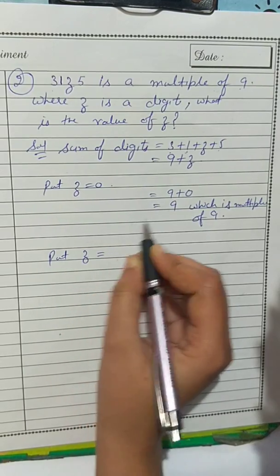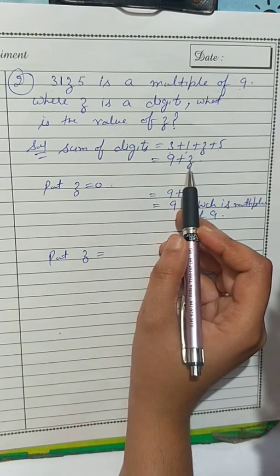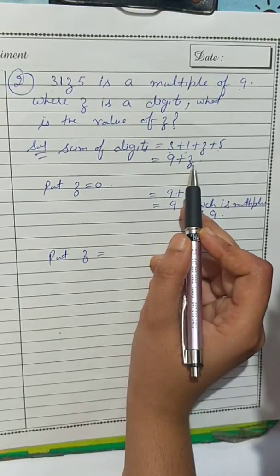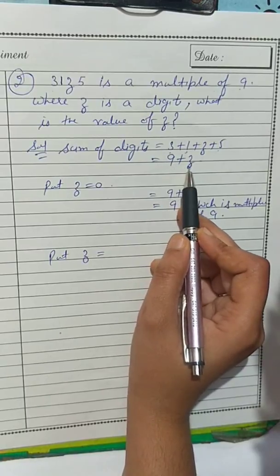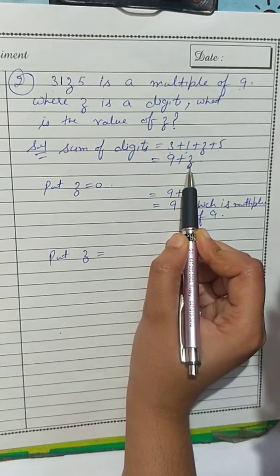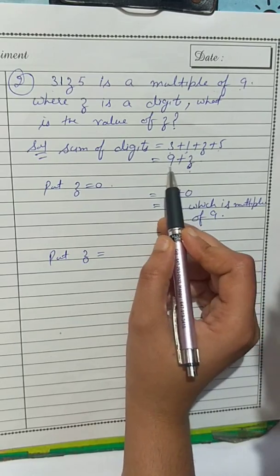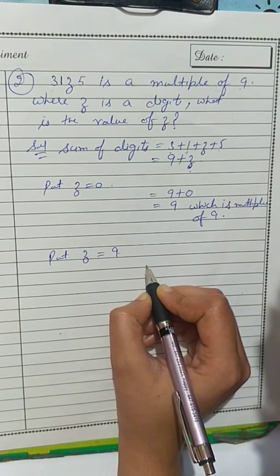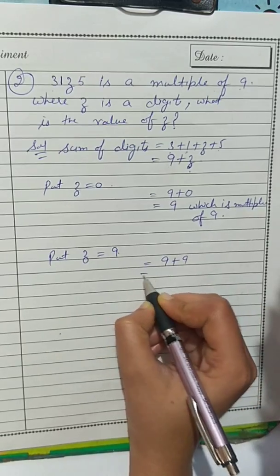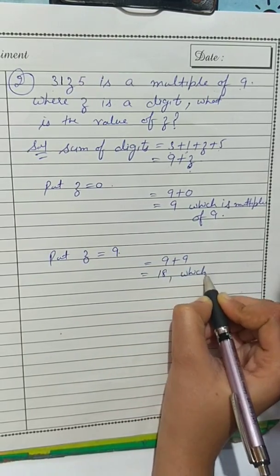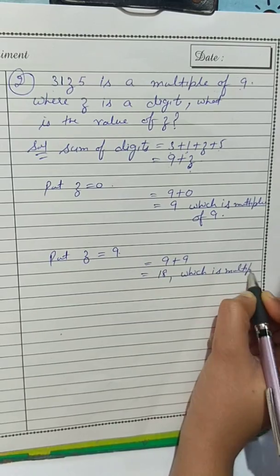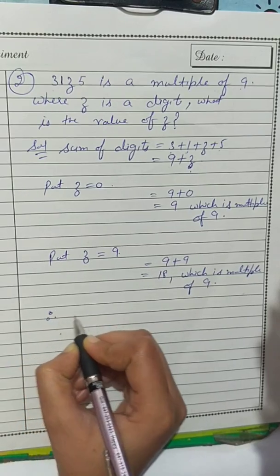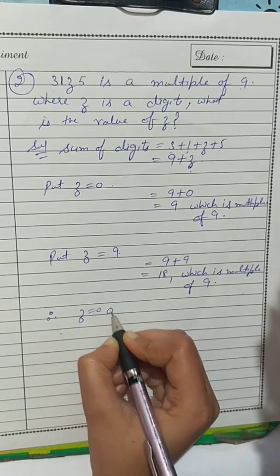Now let's check other values. If z = 1: 9 + 1 = 10, not in table of 9. z = 2 gives 11, no. z = 3 gives 12, no. z = 4 gives 13, z = 5 gives 14 — none work. z = 8 gives 17. When z = 9: 9 + 9 = 18, which is a multiple of 9. So z = 9 also works.